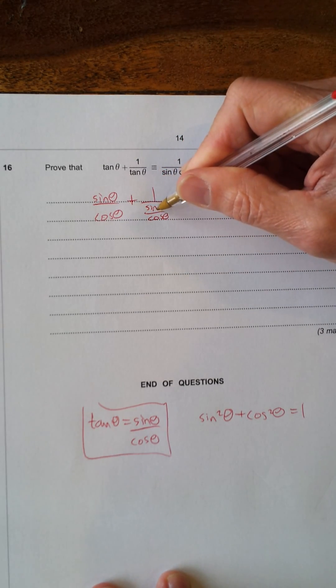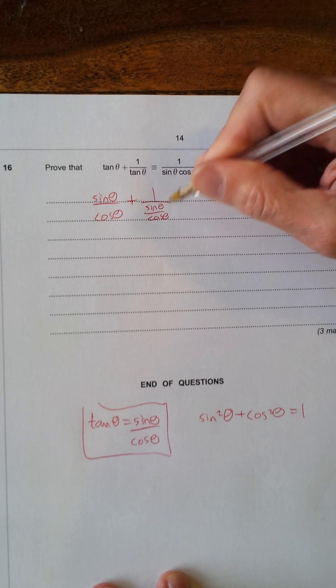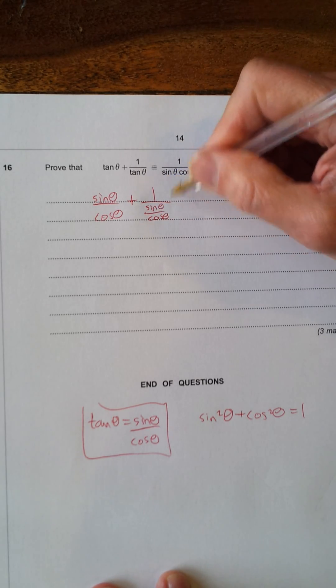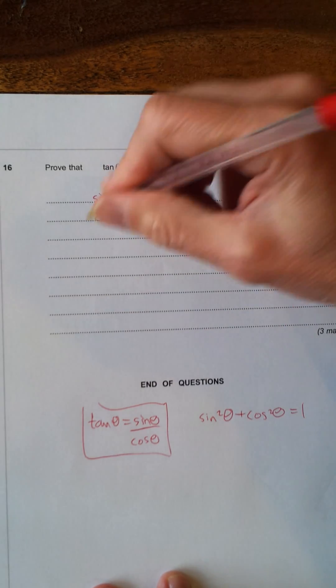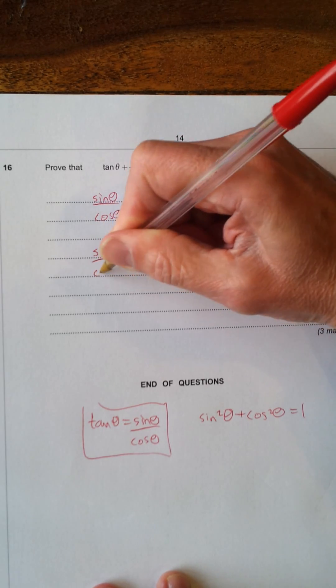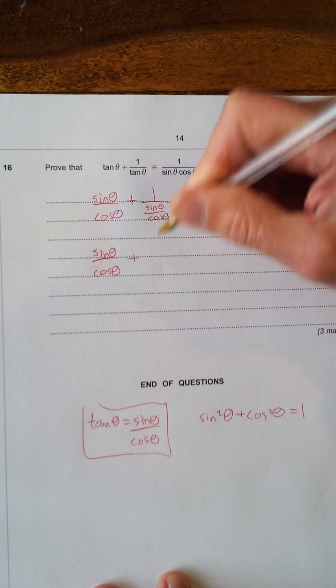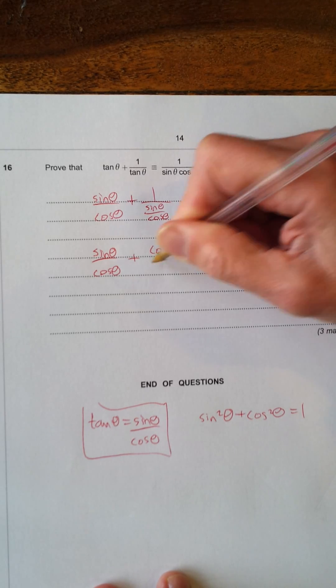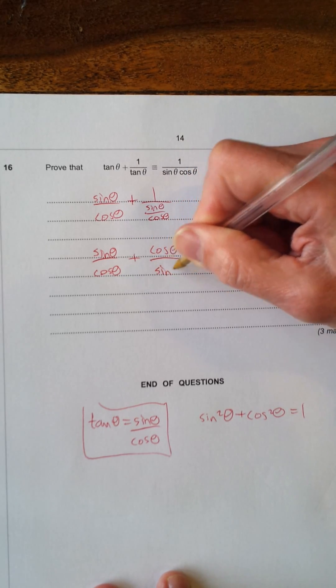Now, when it's this one divided by the fraction, what you can do is take it to the top in the numerator and switch it upside down. So, you've got sin θ/cos θ + cos θ/sin θ.